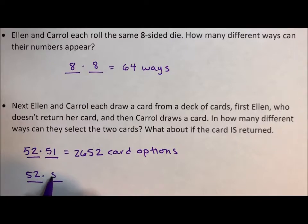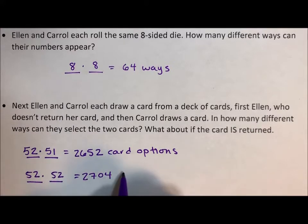But you know what? So does Carol. So now instead of 52 times 51, we have 52 times 52. And in this situation, we have 2,704 card pair options.